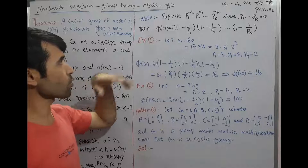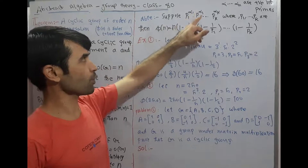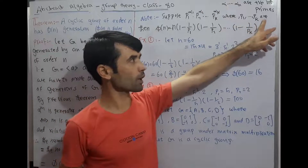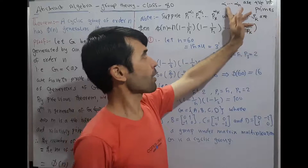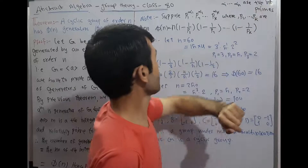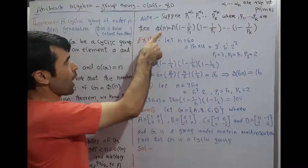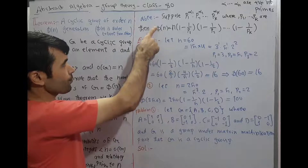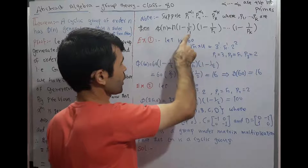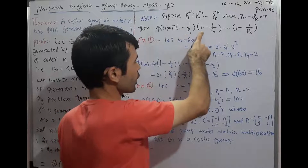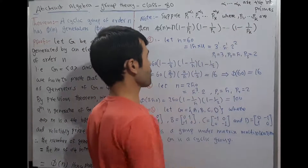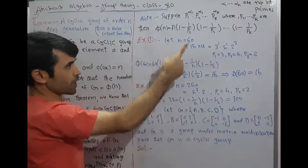Where p1, p2, …, pk are primes and α1, α2, …, αk are positive integers. We can find φ(n) from the formula: φ(n) = n · (1 − 1/p1) · (1 − 1/p2) · … · (1 − 1/pk). For example, let n = 60.